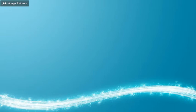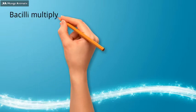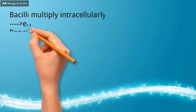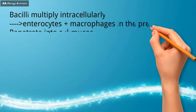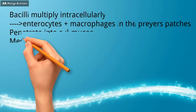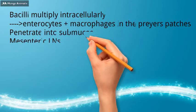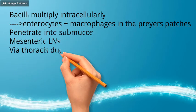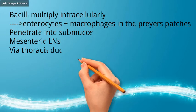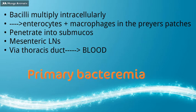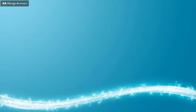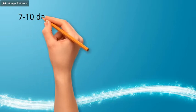The bacilli multiply intracellularly in the enterocytes as well as in the macrophages of the Peyer's patches. Some bacteria penetrate into the submucosa and pass to the local mesenteric lymph nodes. Then, from the lymph nodes via the thoracic duct, they invade the bloodstream — this is called primary bacteremia, occurring within 7 to 10 days of the incubation period.